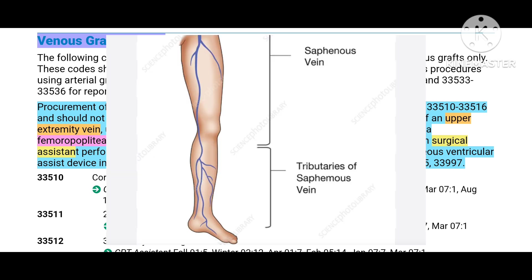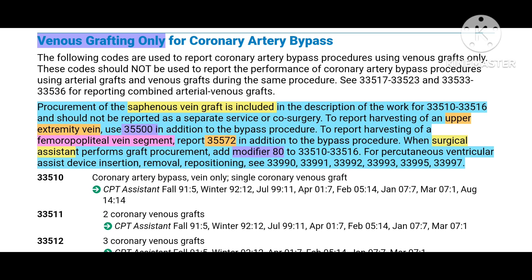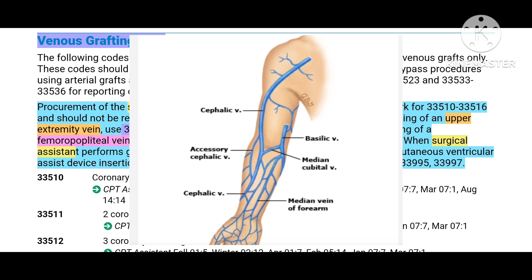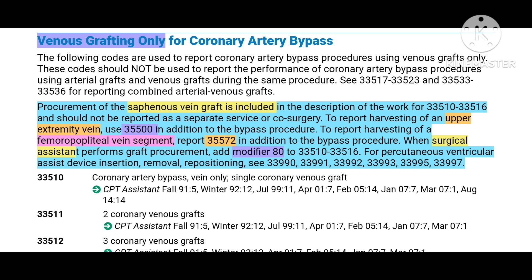Saphenous vein is a vein found in the leg region, and if taken as part of CABG, no separate code is needed. If harvesting an upper extremity vein — from the shoulder to the wrist region — you have to report additional code 35500, used when the procedure is done by open method. If the upper extremity vein is procured using an endoscopic approach, the code to report is 33508.